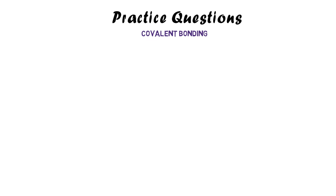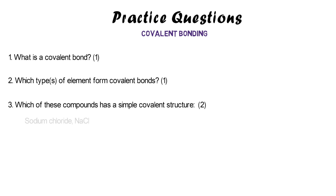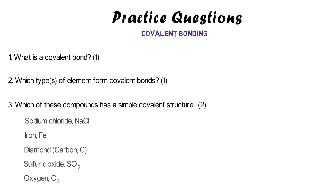Here are some practice questions for covalent bonding. Number one: what is a covalent bond? Number two: which types of elements form covalent bonds? Number three: which of these compounds has a simple covalent structure — sodium chloride, iron, diamond, sulfur dioxide, or oxygen? Pause the video and have a go at these questions.